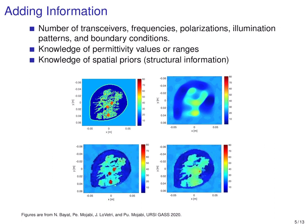The second category is to use prior information about the object we are imaging. For example, if we have knowledge about the expected permittivity values or the ranges of permittivity, we can take advantage of that. More recently, people are also looking at knowledge of spatial priors — structural information about the object of interest.